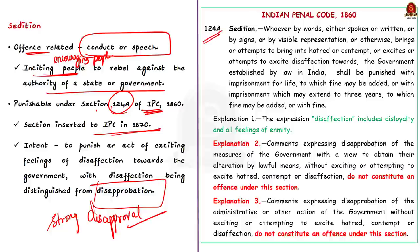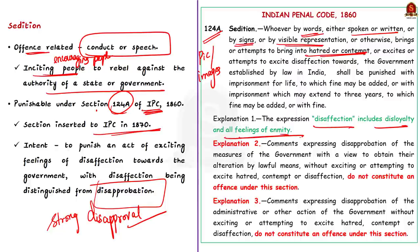Sedition under Section 124A includes spoken or written words, signs, and visible representations like pictures or images. Disaffection includes disloyalty and all feelings of enmity. Two punishments are prescribed: imprisonment for life with or without fine, or imprisonment up to three years with or without fine. The section also states what does not constitute sedition — comments expressing disapprobation of the government's measures or administrative actions are not to be construed as sedition.